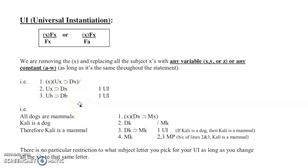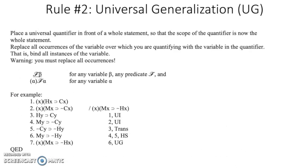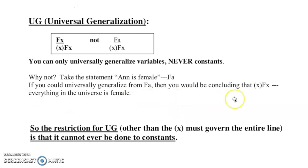So there's no particular restrictions to what subject letter you pick for your UI, as long as you change all the X's in that same letter. And of course that could be x, y, or z. Okay, next rule: this is place a universal quantifier in front of the whole statement. This is like what we're mentioning earlier. If you're going to do it, you have to do the entire statement and make certain that you're not, make certain that it's going to be the main connector.